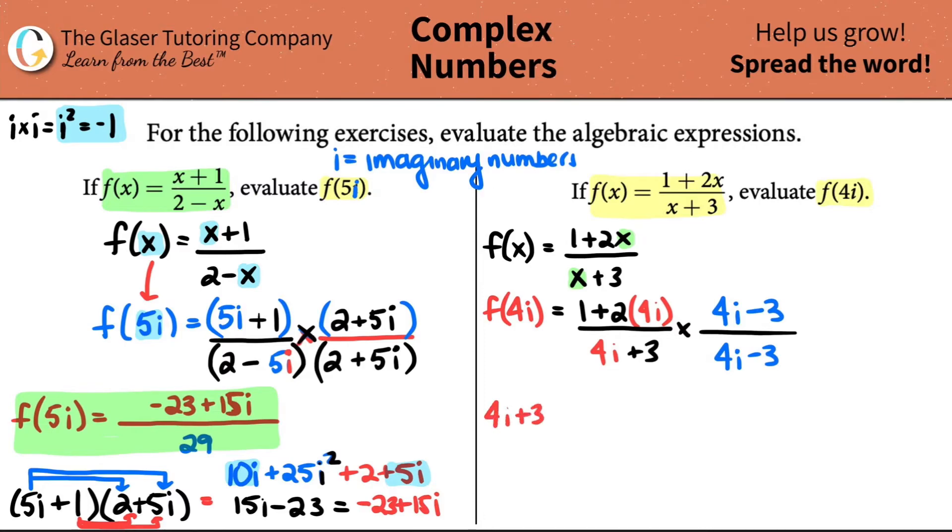So let's work with the bottom first. We have 4i plus 3 all multiplied by 4i minus 3. We have to be fair. We have to take the first term, 4i, times it by 4i, but then we have to times it by negative 3. And then we move to the second term. 3 wants to be multiplied by the 4i, but then also 3 wants to be multiplied by the negative 3.